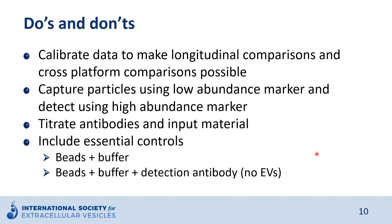Here's a summary of the main recommendations. One should calibrate data to make longitudinal comparisons and cross-platform comparisons possible. One should capture particles using low abundance markers and detect using high abundance markers ideally—that's not always known in advance, but it is highly recommended since the signal measured is derived from the detection antibodies and signals will generally be higher. You should also titrate antibodies and input material. And of course, include essential controls as discussed before—most importantly, beads alone and beads plus buffer plus detection antibodies without any EVs in the sample.